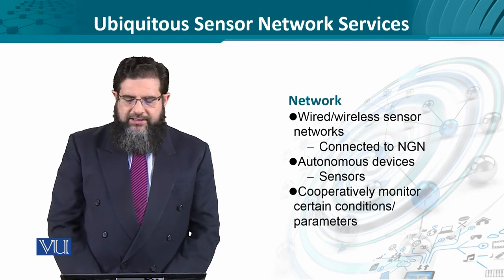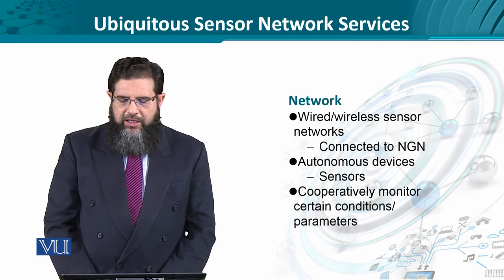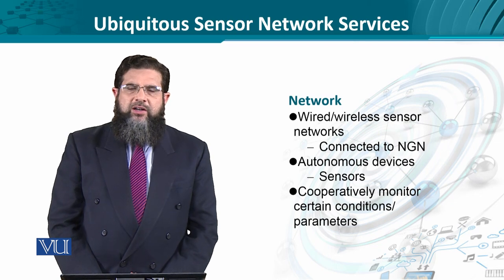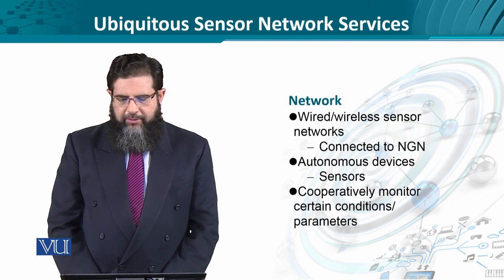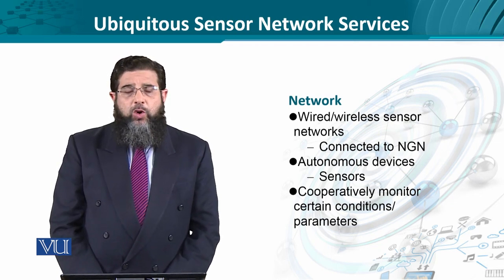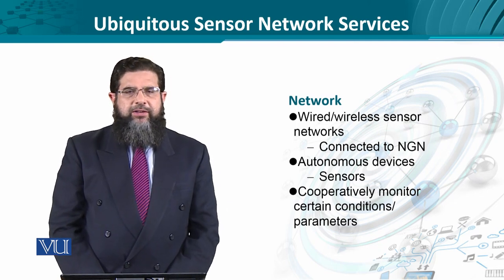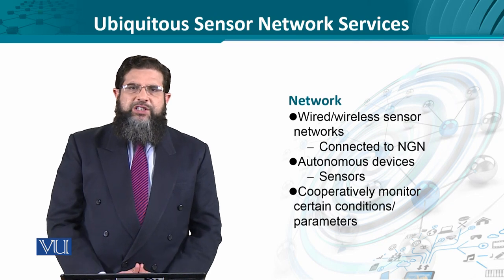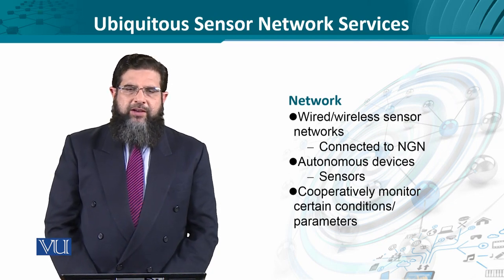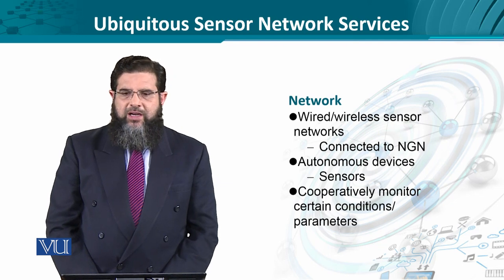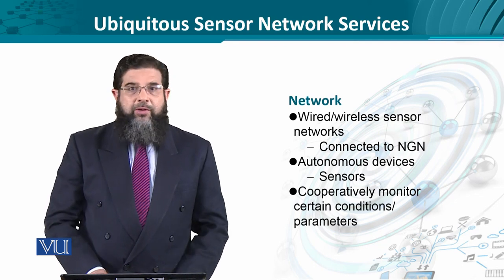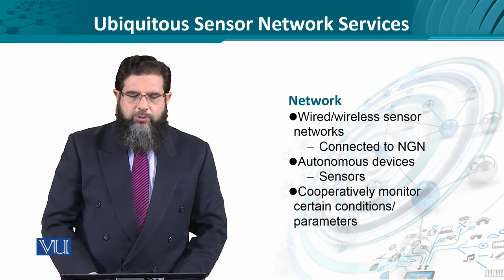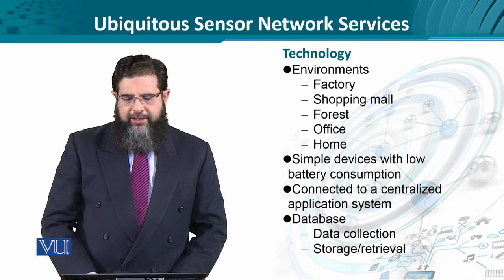When all devices in the sensor network work together, it is known as a cooperative or distributed processing environment. If sensors are working cooperatively, there is synergy, support behavior, redundancy, and reliability. That is why sensor networks have a lot to offer in terms of research and applicability.